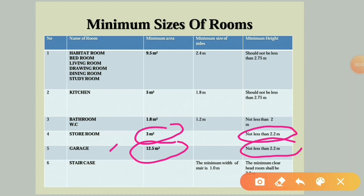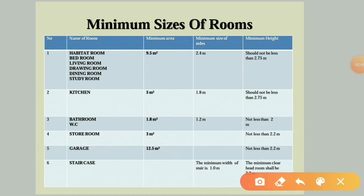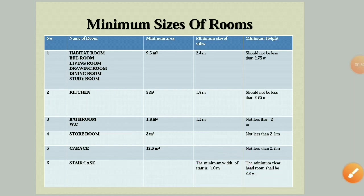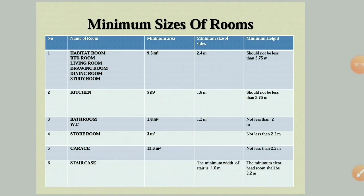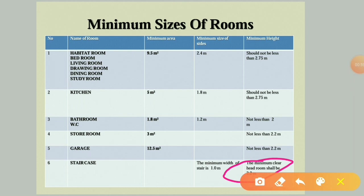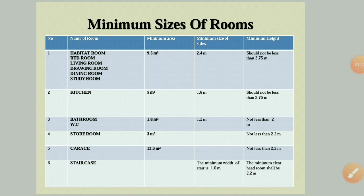For a garage, the minimum area required is 12.5 sq.m and the height should not be less than 2.2 meters. For a staircase, the minimum width is 1 meter and the minimum clear headroom shall be 2.2 meters, ensuring stairs are not too steep and remain comfortable.